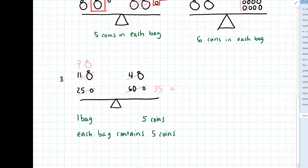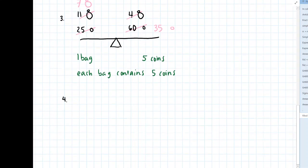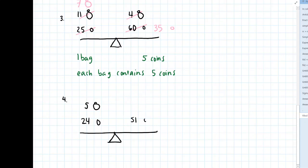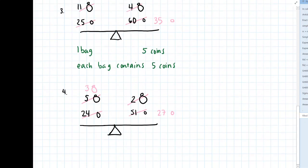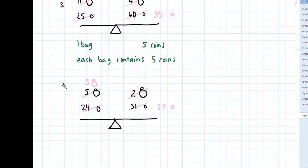Let's also go through number four. We've got five bags and 24 coins on one side, and 51 coins alongside two bags on the other. We can remove what's in common again — taking away the 24 from both sides leaves us with 27 coins. Taking away the two bags from both sides leaves us with three bags on the left. Dividing both sides by three, we get one bag on the left and nine coins on the right.